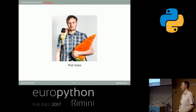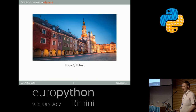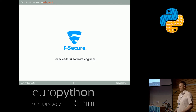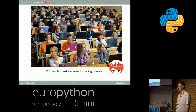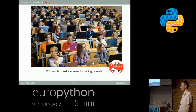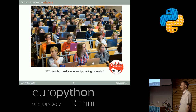My name is Piotr Dyba — you can also call me Peter. I came from Poznań, Poland, which is two and a half hours drive from Berlin, and about 15 hours drive from here, Rimini. I work at F-Secure Poland where I'm a team leader and software engineer on a project called Rapid Detection Service. I'm also a leading mentor at PyLadies where we currently have up to 220 students. We've been running over three years now and will be starting our fourth year this year.